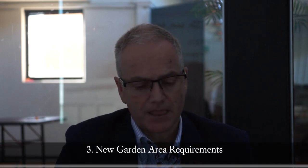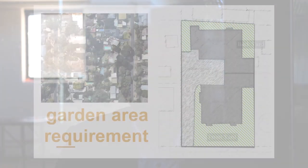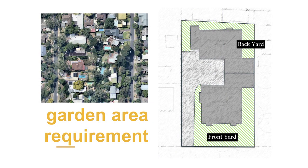Garden area was a requirement that planners weren't expecting to see introduced into the planning scheme. It requires a certain percentage of site area to be set aside for garden area. There's a sliding scale: lots of 400 to 500 square meters must provide 25% of their site as garden area; lots of 501 to 650 square meters are required to provide 30%; and sites above 650 square meters the requirement is 35%. The challenge for practitioners at the moment is to determine what garden area actually is.